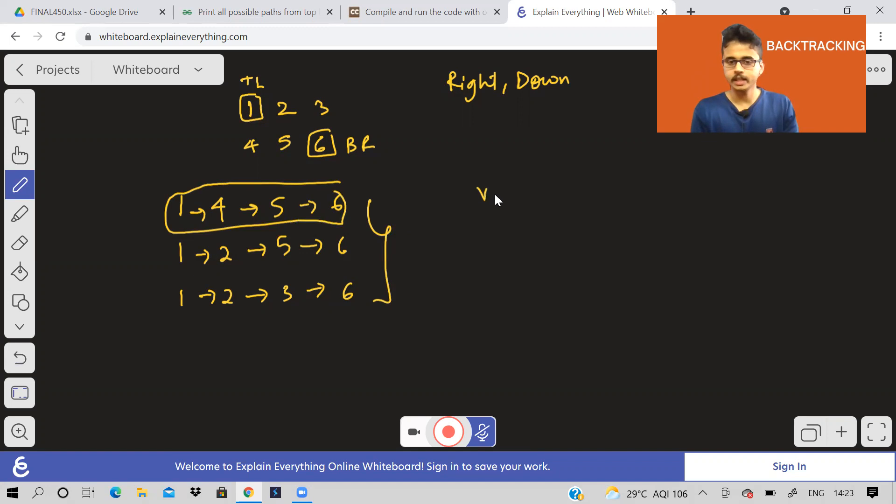So like this, all these ways we have to print. So basically each path can be understood as a vector of all those integers, or you can even take it as a string. Finally, you have to return a vector of strings or vector of vectors, whatever you need to return or print them.